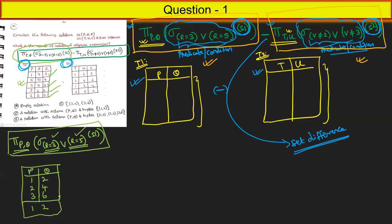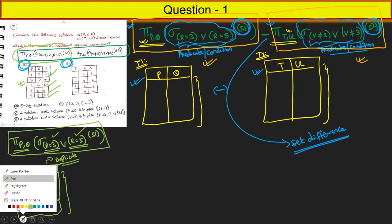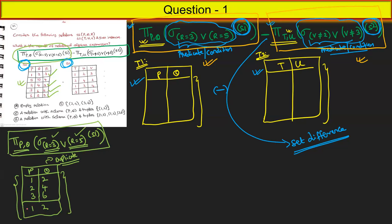Now this table is formed. If you ask whether the table contains any duplicates — check: 1,2 and 1,2 and 2,4 and 3,6 and 1,2 — yes, there are duplicates. The main property is: project does not allow duplicates. So the result table for PQ is: 1,2 — 2,4 — 3,6. The left-hand side of the relational algebra query is done.